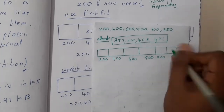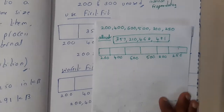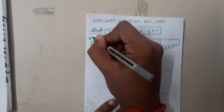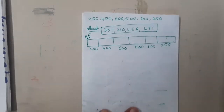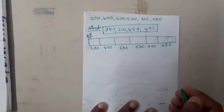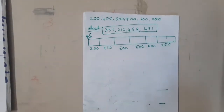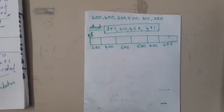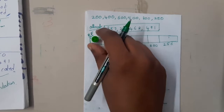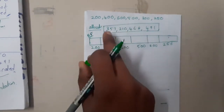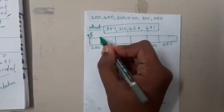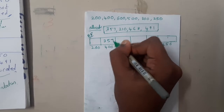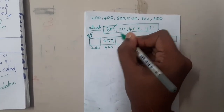Let us start with first fit, since that is the traditional way. In first fit, you place your item in whichever possible slot it fits — no more thinking. Can 357 fit in the 200 slot? No. Can it fit in the 400 slot? Yes. So we place 357 in the 400 slot.